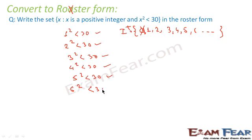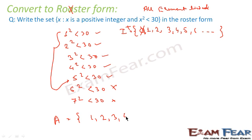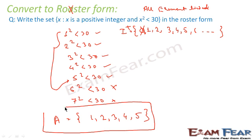6² is 36, which is not less than 30, so we stop there. 7² is 49 — also no. So the elements we want are 1, 2, 3, 4, 5. To write this in roster form, all elements are listed, separated by commas, enclosed in braces. So A = {1, 2, 3, 4, 5}. This is the roster form.